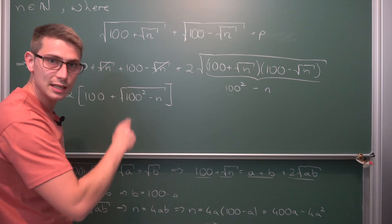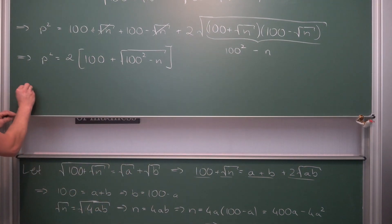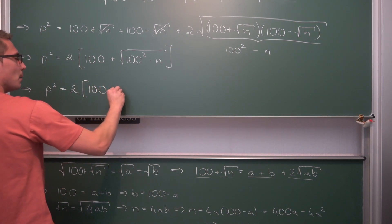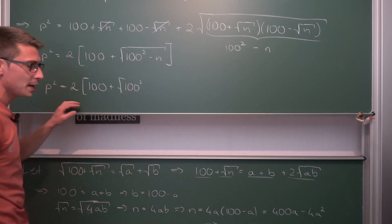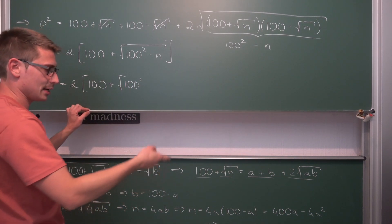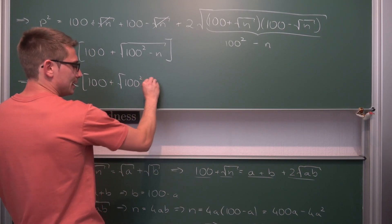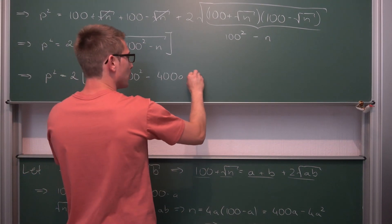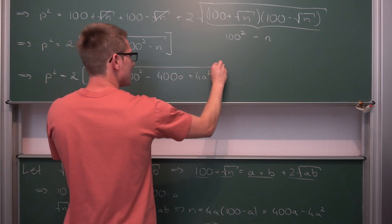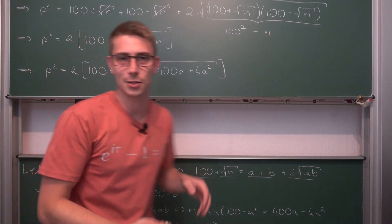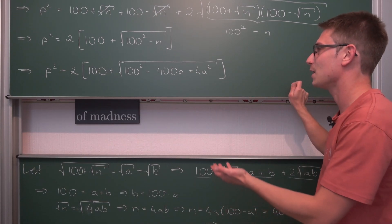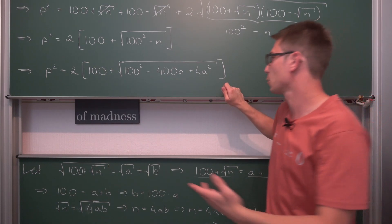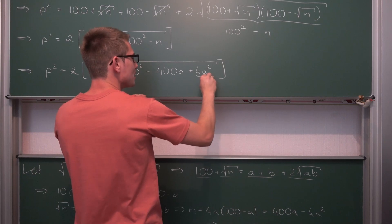Plugging in n = 400a − 4a²: inside the square root we get 100² − (400a − 4a²) = 10000 − 400a + 4a². So p² = 2(100 + √(10000 − 400a + 4a²)). Everything is going to unfold very nicely here.